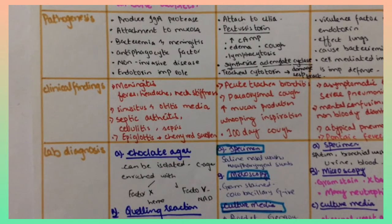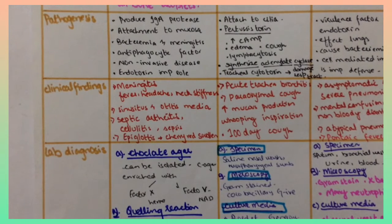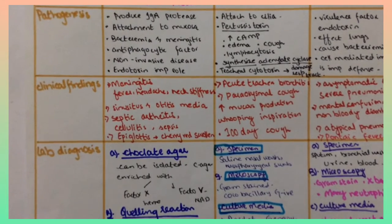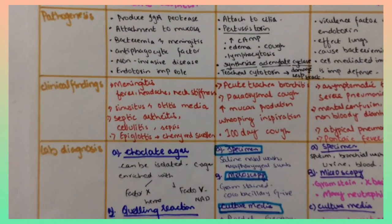Clinical findings of Haemophilus is that it causes meningitis, fever, headache, stiffness, sinusitis and otitis media, septic arthritis, cellulitis, sepsis, epiglottitis, swelling.